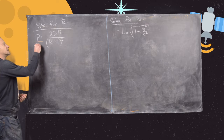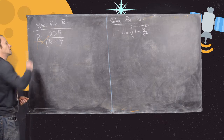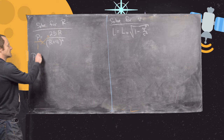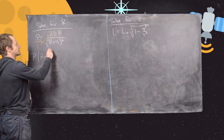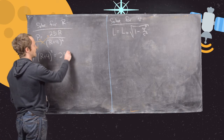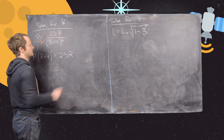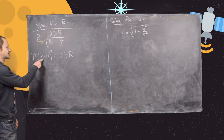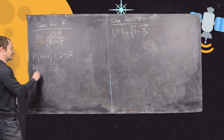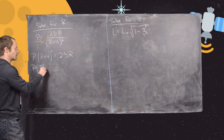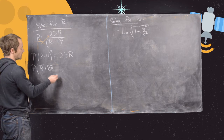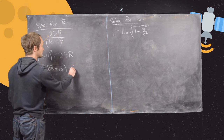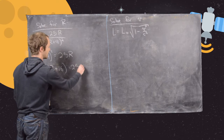The general first step in this case would be to cross multiply. That's going to give us P times (R plus 4) squared equals 25R. Now the next thing we can do is multiply out the left-hand side, so that's going to give us P times (R squared plus 8R plus 16) equals 25R.